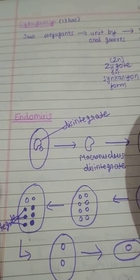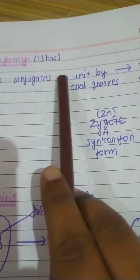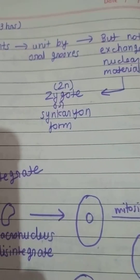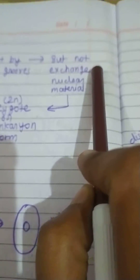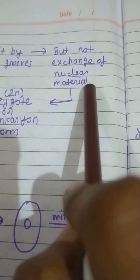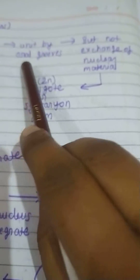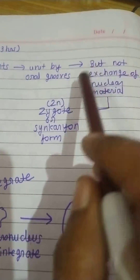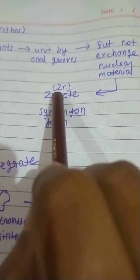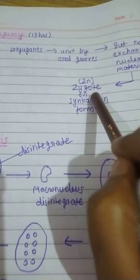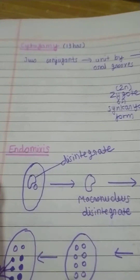Asexual reproduction also takes place by cytogamy, which occurs in Paramecium and takes 30 hours. Two conjugants unite but there is no exchange of nuclear material. After they unite, they form a zygote which is known as syncarion, which is diploid. This process is known as cytogamy.